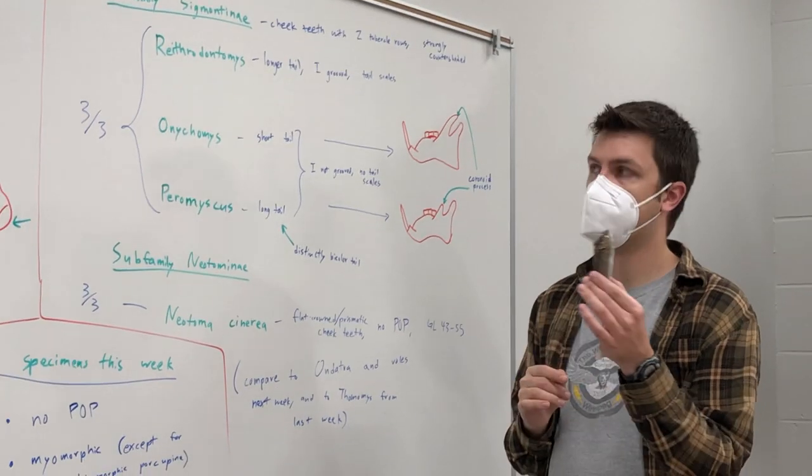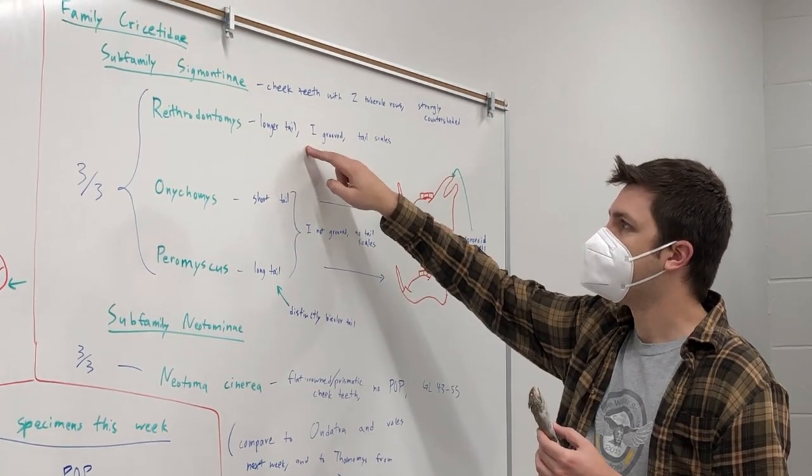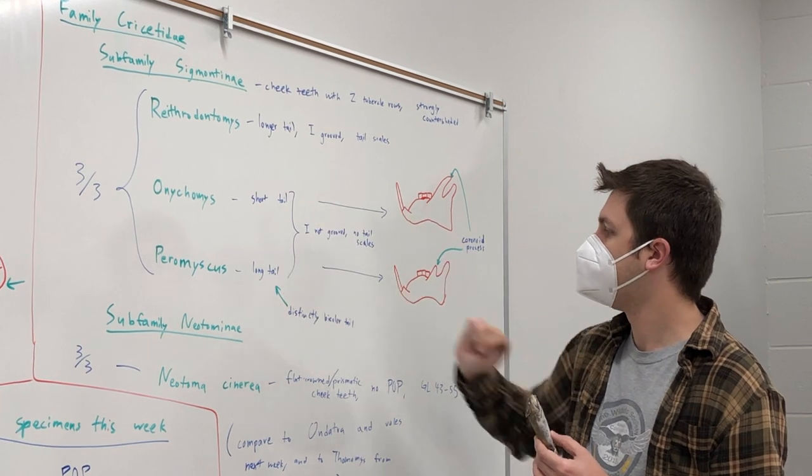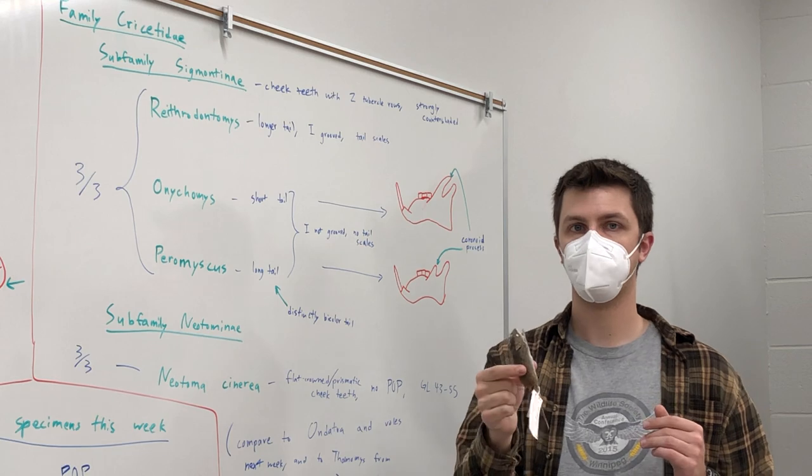Also, it's not a vole, which we'll talk about next week. Okay. And then you look at the tail, longer tail, and the tail is strongly bicolored, ta-da, it's Peromyscus.